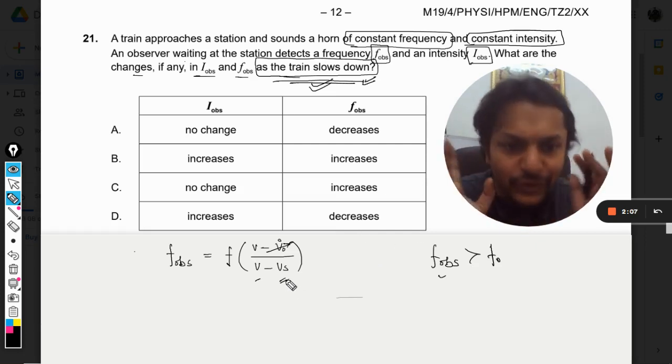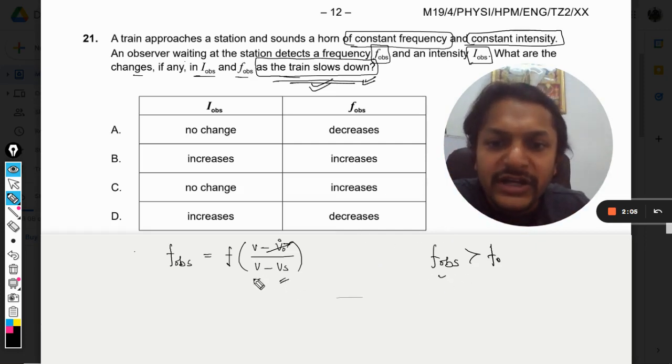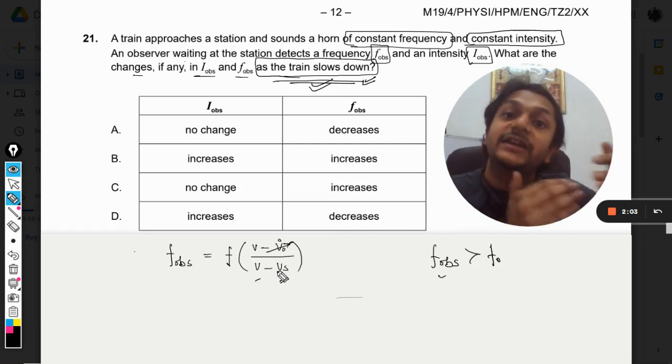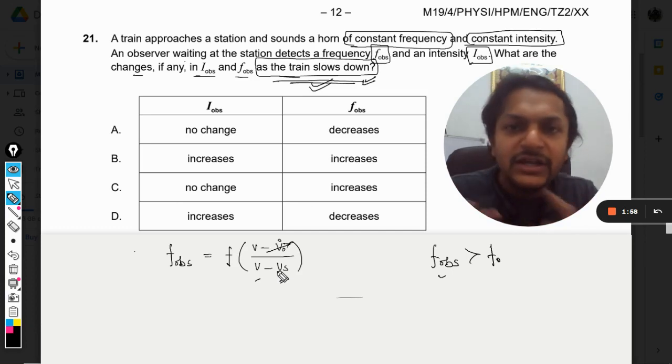Train is slowing down, so this gap, the denominator—it had a certain value but now it is increasing the gap—because it is increasing, the frequency will keep on decreasing. This frequency that the observer is observing will keep on decreasing because the denominator is increasing with respect to time.